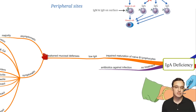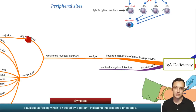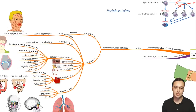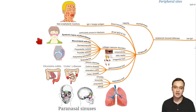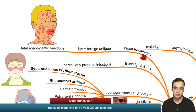IgA is found in the mucosa — in the respiratory tract, gastrointestinal tract, and urogenital tract — lining these tracts and defending them from intruders. With a weakened mucosal defense, patients will in the majority of cases be asymptomatic, but in some patients symptoms can appear.